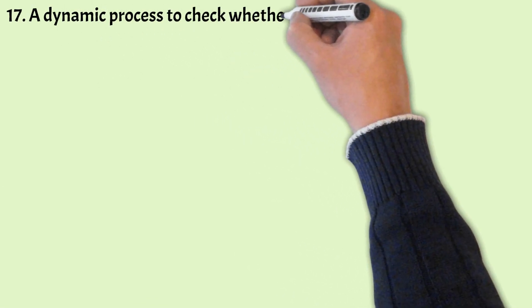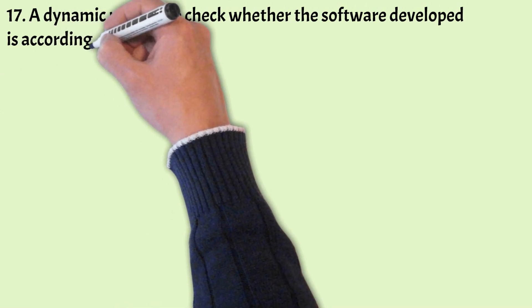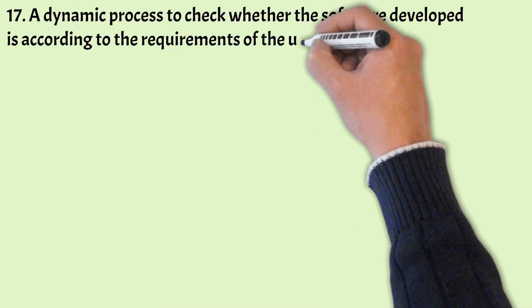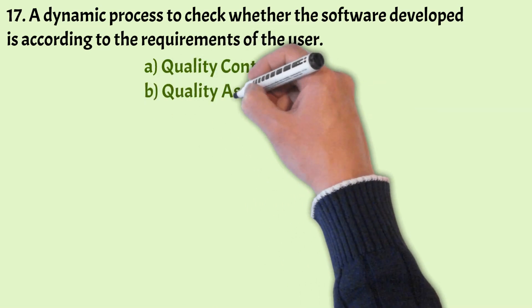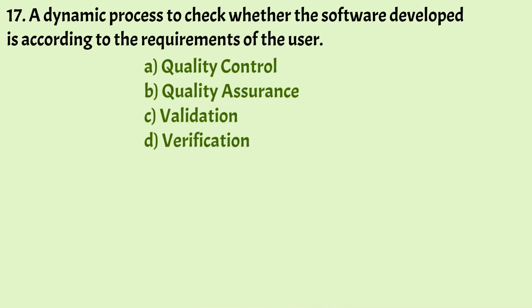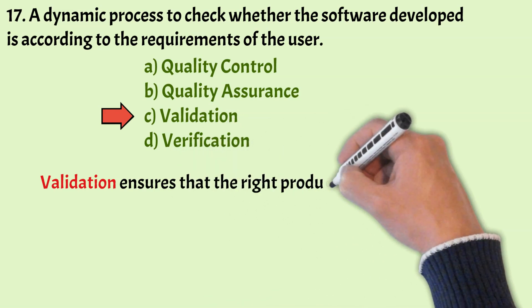Next: A dynamic process to check whether the software developed is according to the requirements of the user — what is this called? Options: Quality Control, Quality Assurance, Validation, Verification. The correct answer is Option C, Validation. Validation is a testing process where both functional and non-functional tests are performed. It is a dynamic testing process, and it ensures that the right product is developed.